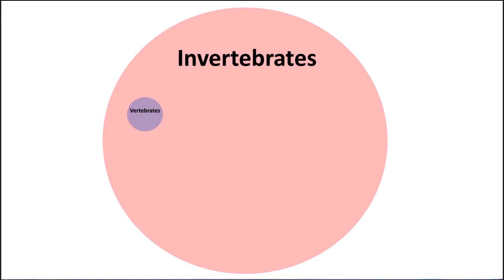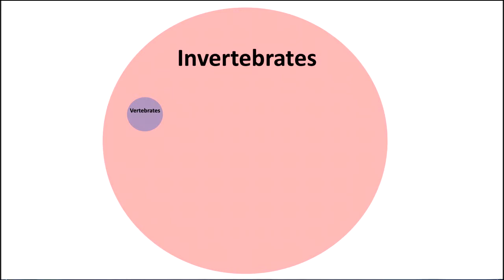And in fact, in many ways, vertebrates are a type of invertebrate. Let's look at the phylogenetic tree to show what this means. Here are the invertebrates. And you can see that vertebrates evolved from invertebrates. In fact, you could say that vertebrates are a kind of invertebrate. I like to say that.